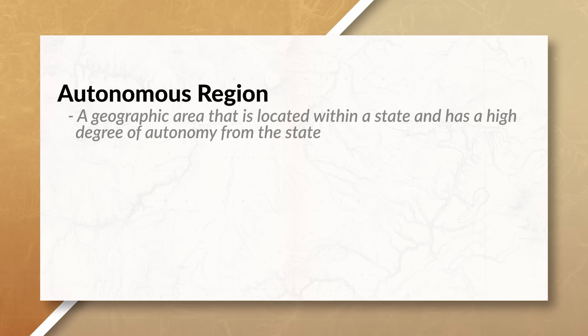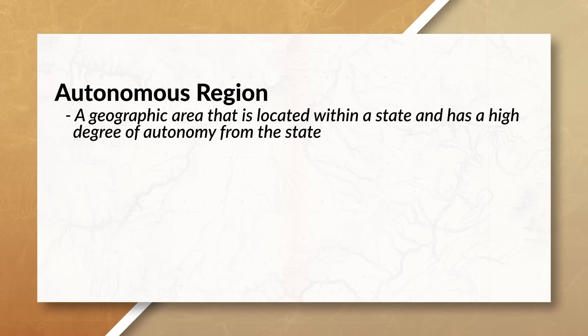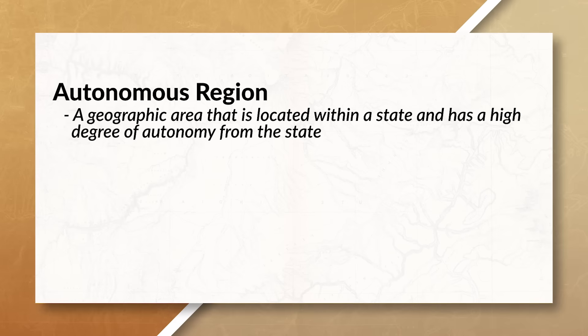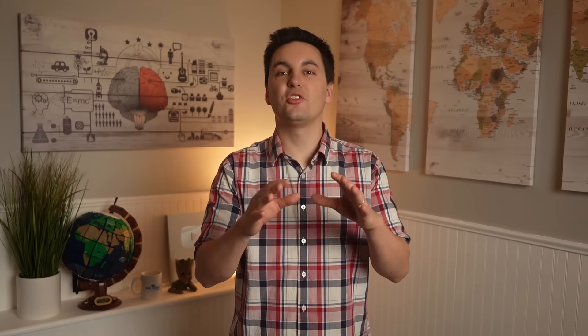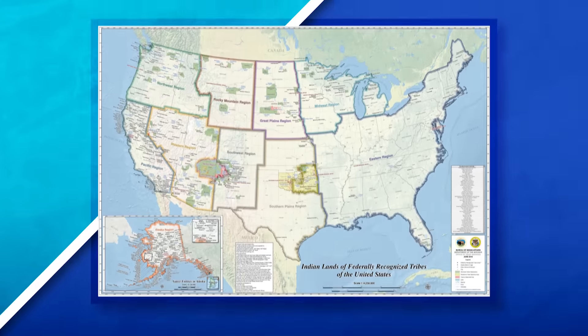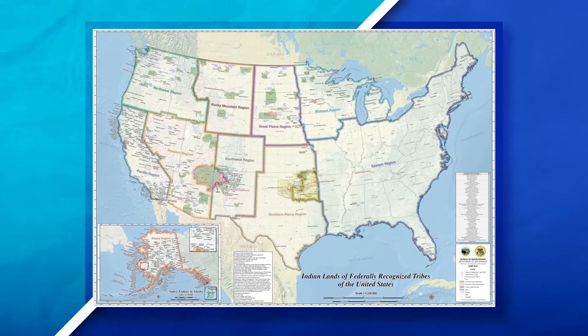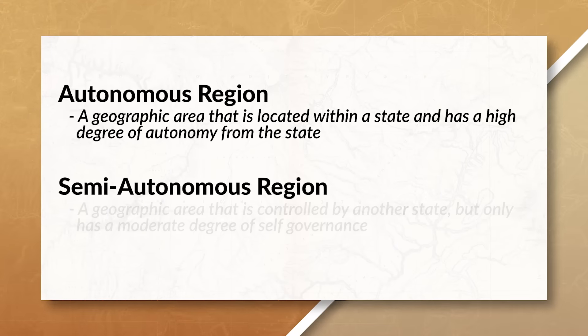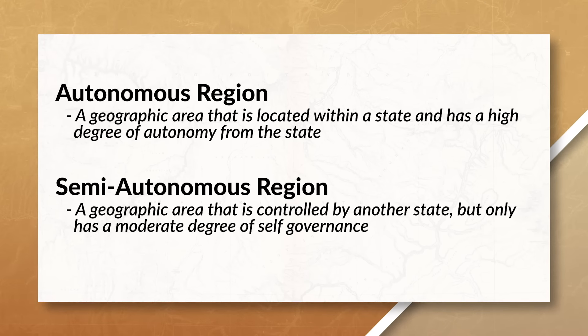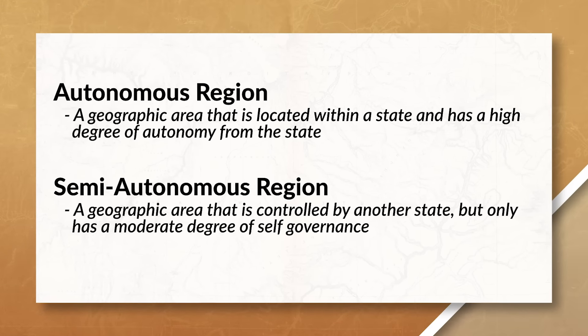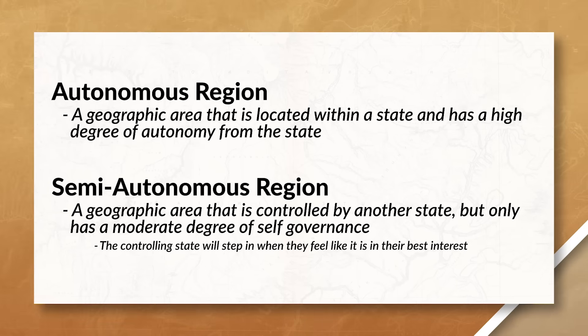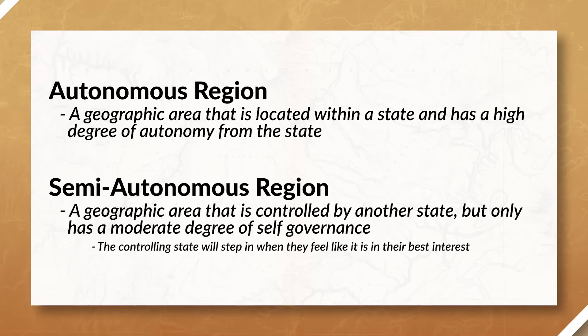Changing gears a little into our next political organizations, we have autonomous regions and semi-autonomous regions. Autonomous regions are located within a state and have a certain degree of autonomy from the state. These regions can govern themselves and have a high degree of freedom and self-governance, meaning there is limited input and interaction from the national government. An example of this would be Native American reservations in the United States. Semi-autonomous regions, on the other hand, have a moderate degree of self-governance. These regions have a say over their political and economic systems. However, the national government can step in when they feel it is in their best interest.